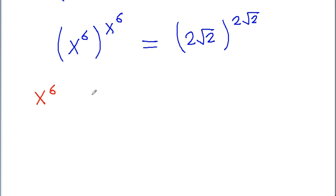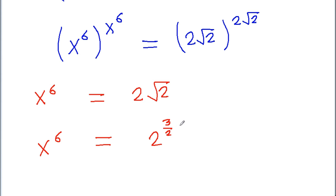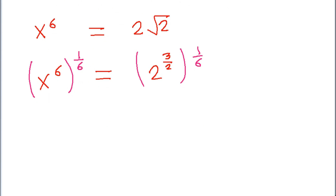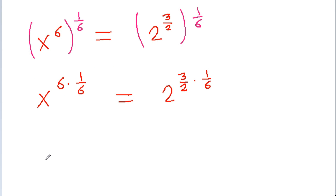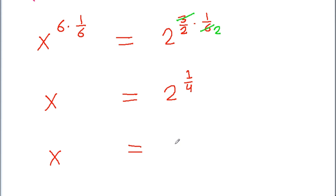So x power 6 is equal to root 2 power 2, and it is x power 6 is equal to 2 power 3 by 2. If we raise both sides to the power 1 by 6, we get x power 6 into 1 by 6 is equal to 2 power 3 by 2 into 1 by 6. That gives us x power 1 is equal to 2 power 1 by 4, or we get x is equal to the 4th root of 2. So that is the required value of x.